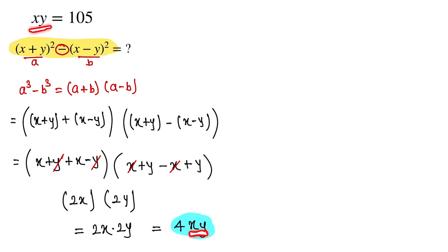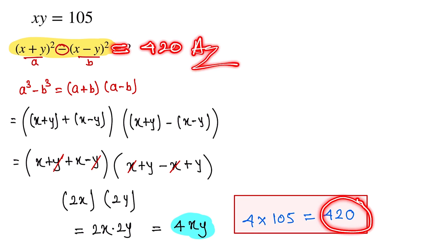So we put this value 105 here. Here is 4 into 105, and this one is equal to 420. So this one is the answer. The value of this given equation is 420, and this one is our final answer.